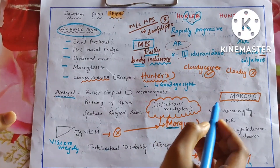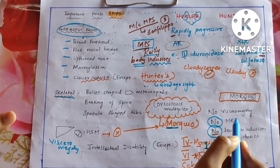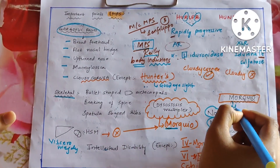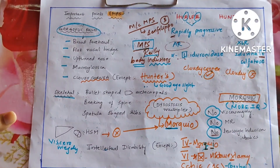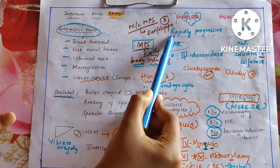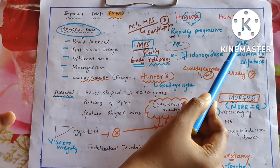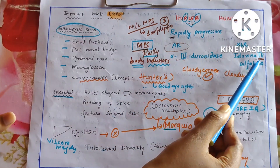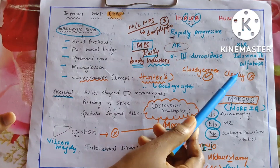In Morquio, only one thing is 'more' — that is more IQ — and the enzyme name is also more (lengthy): N-acetylgalactosamine-6-sulfatase. Coming to the difference between Hurler's and Hunter's: Hurler's is rapidly progressive, Hunter's is slowly progressive. Hurler's is autosomal recessive, Hunter's is X-linked recessive. Cloudy cornea is absent in Hunter's disease.